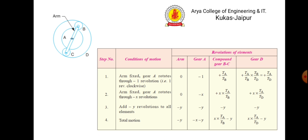Constructing the table: Row 1 — arm fixed, gear a (sun gear) rotates through −1 revolution (clockwise): arm = 0, gear a = −1, compound gear bc = +t_a / t_b, gear d = +t_a / t_d. For row 2, multiply by x. For row 3, add −y to all elements (since we took −1 in row 1). Row 4 is the total motion.